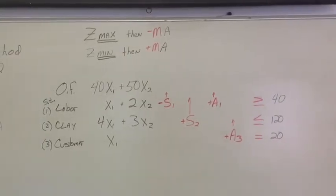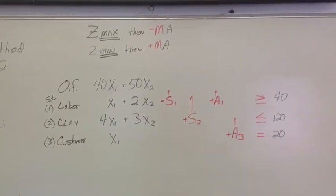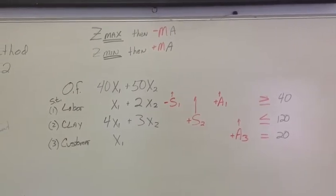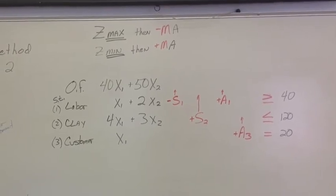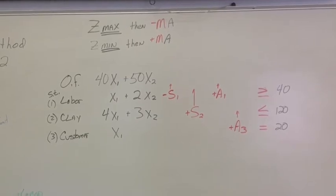Okay, let's roll all our variables up into our objective function. Now, with our objective function, same as last lecture, it was 40x1 plus 50x2.